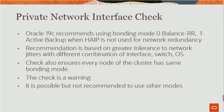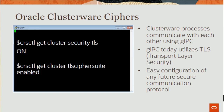Private network interface check: Oracle recommends using bonding mode zero balance, IPLR, or active backup when HIP is not used for network redundancy. This recommendation is based on greater tolerance to network jitter with different combinations of interface switch OS. The check also ensures every node of the cluster has the same bonding mode. The check is a warning — it is possible but not recommended to use other modes.